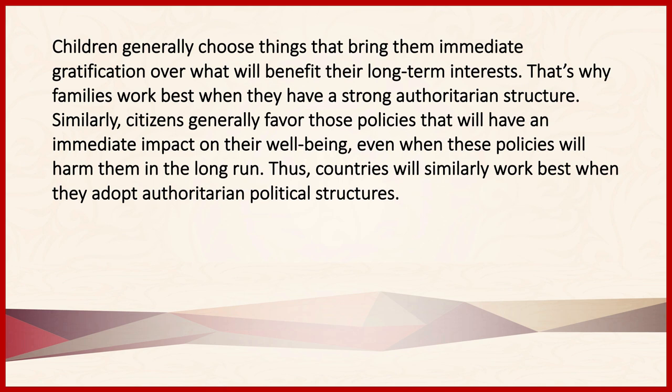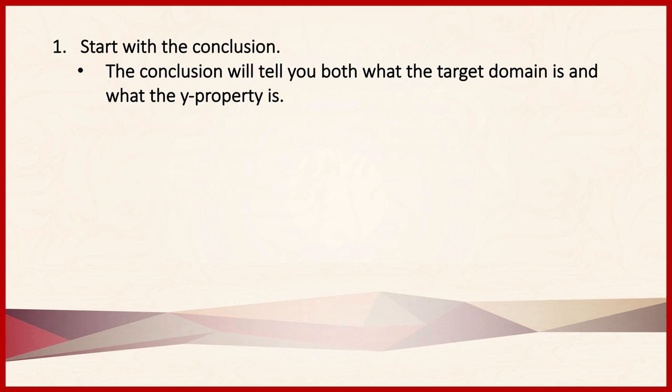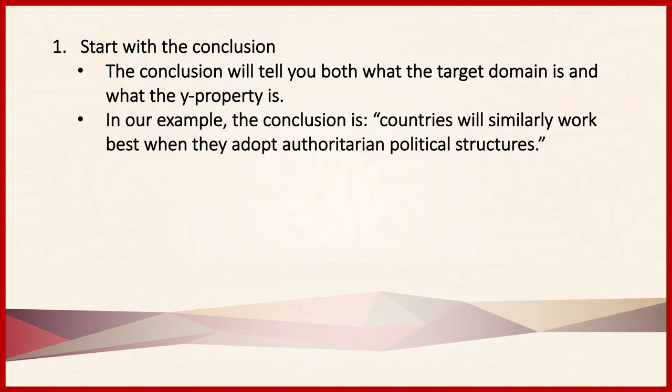What it means to work backwards with an argument like this is that you start with the conclusion. The reason that we do this is that the conclusion will tell you both what the target domain is and what the Y property is. In our example, the conclusion is: countries will similarly work best when they adopt authoritarian political structures.